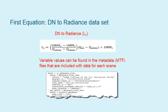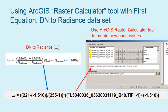To illustrate the first equation — going from digital numbers to radiance — here is a metadata file example showing where you can find the data for each of the different variables. This is the ArcGIS Raster Calculator Tool. The equation may look daunting, but once you get all the variables from your metadata file, you put it into the Raster Calculator Tool at the location shown, and it calculates those values for you.